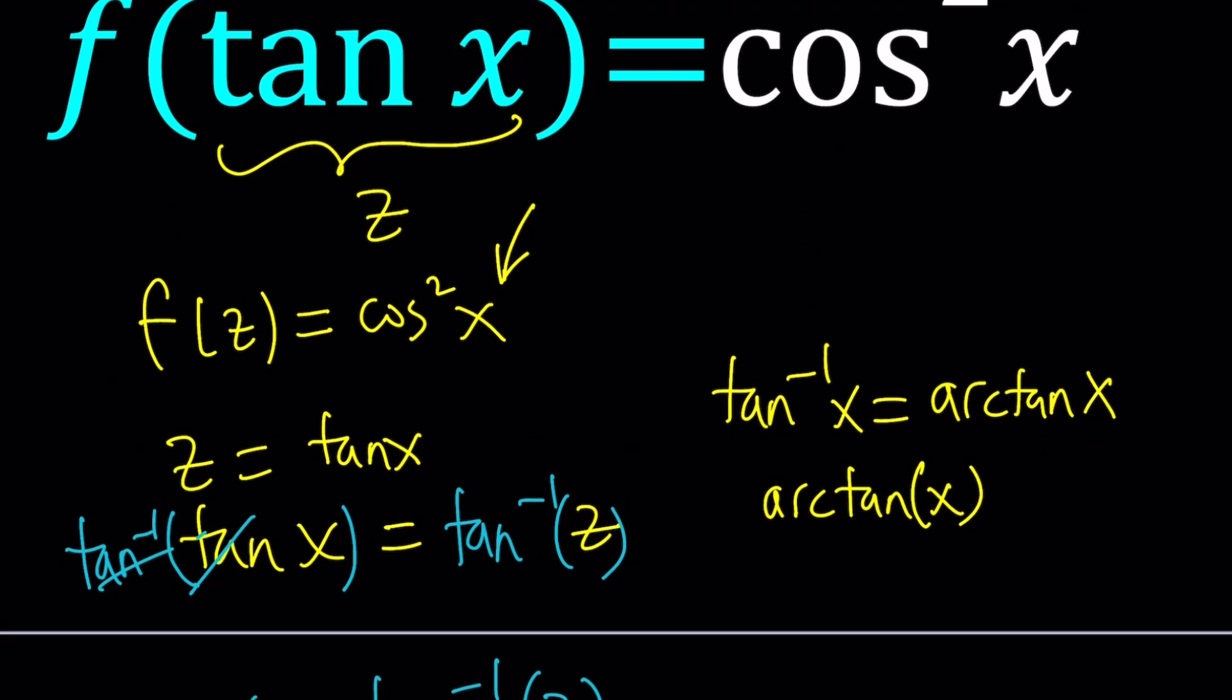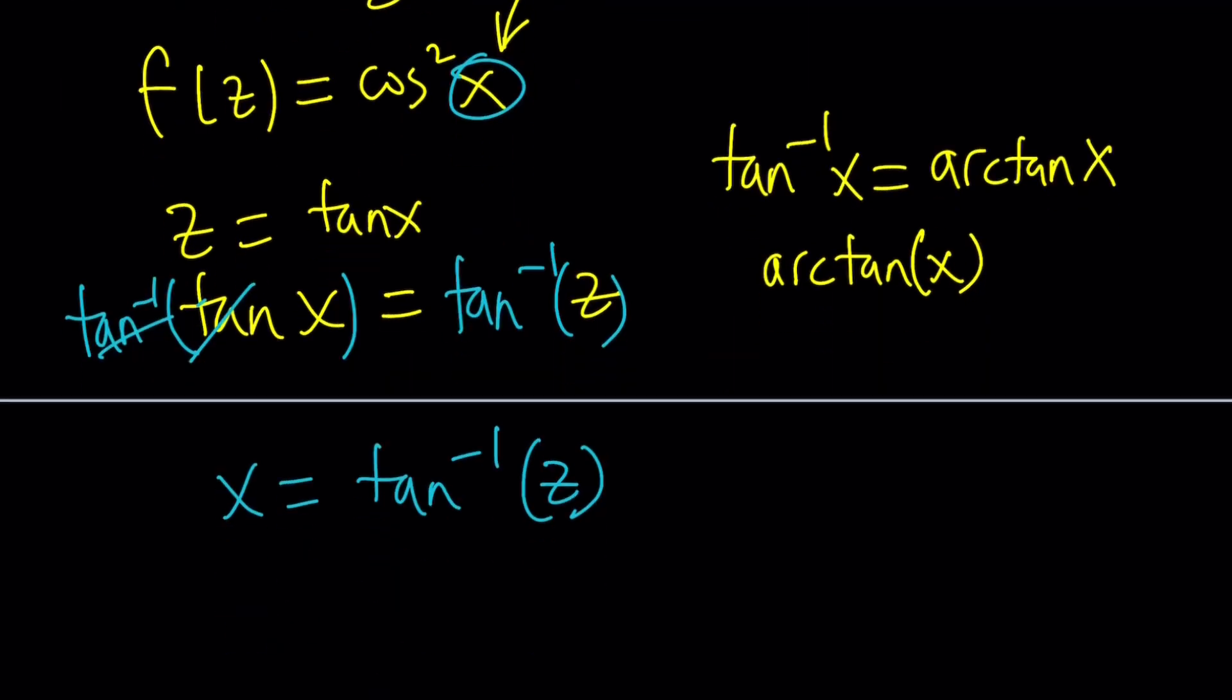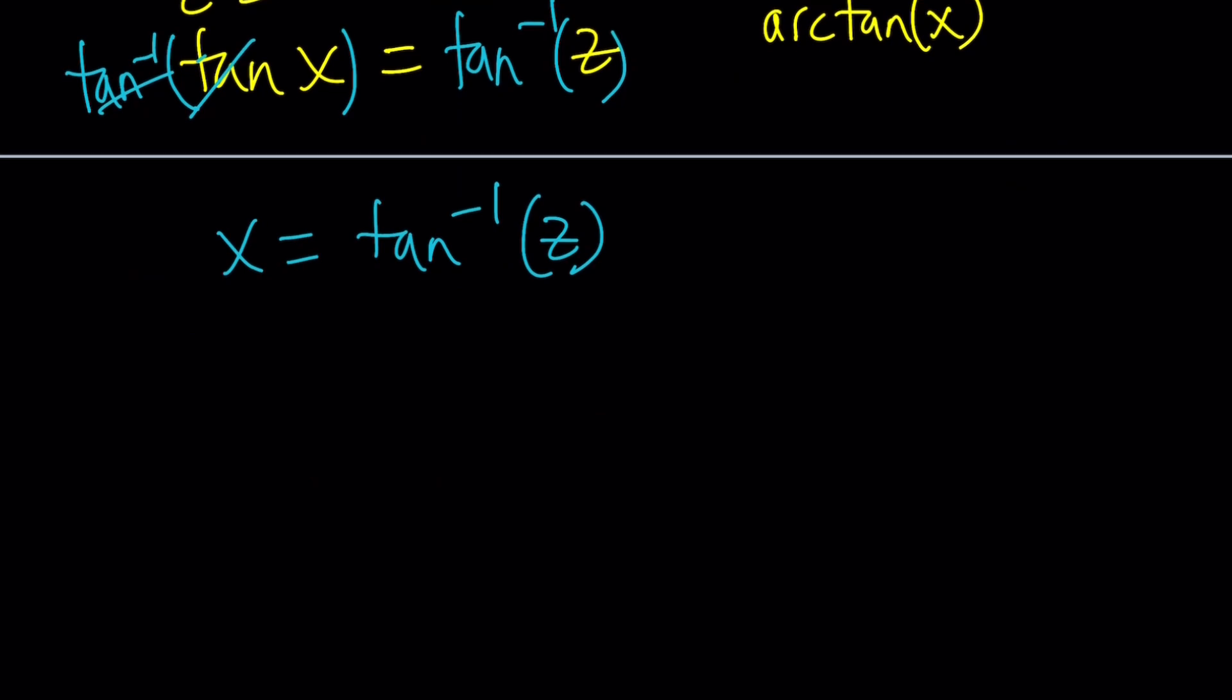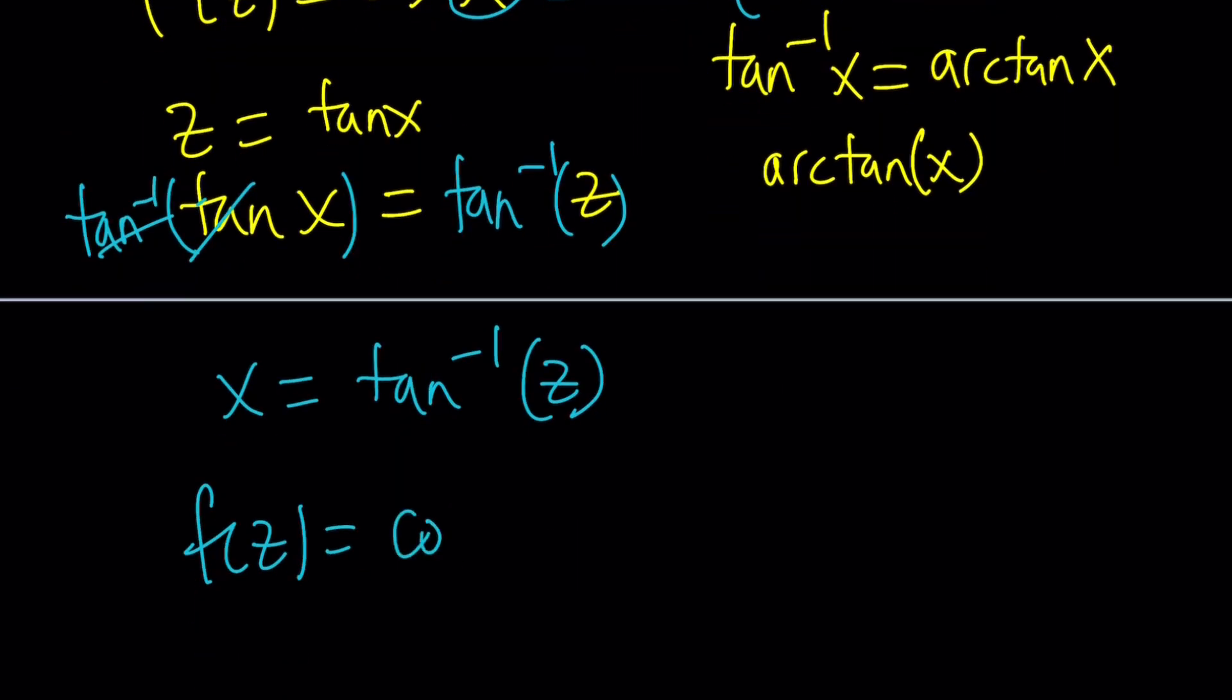Now, we had this, so we can go ahead and replace x with tan inverse of z. And we got ourselves an answer. What we got, f of z equals cosine squared of tan inverse of z. But what is cosine squared of tan inverse? That's kind of complicated.